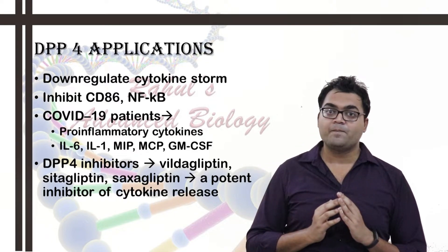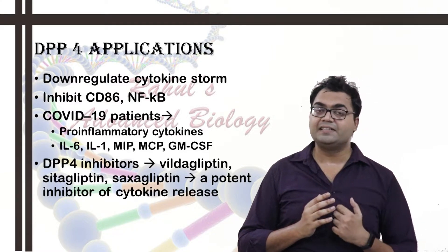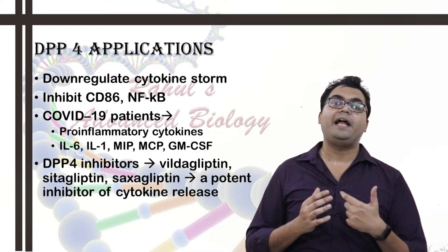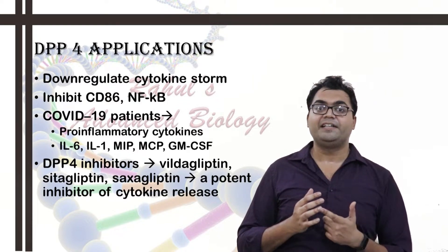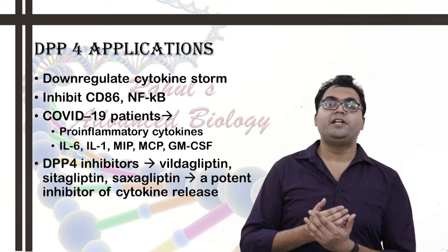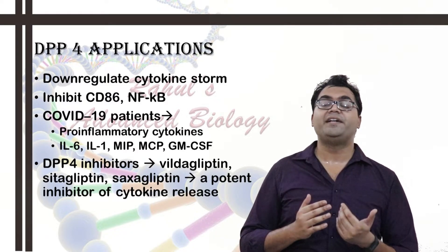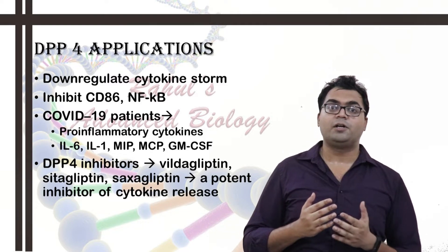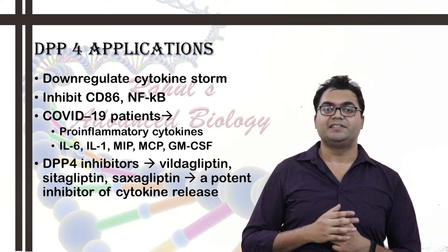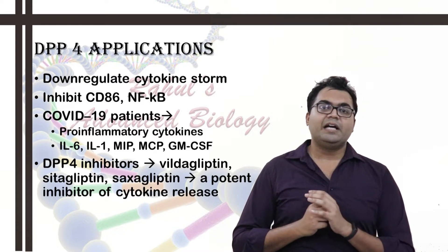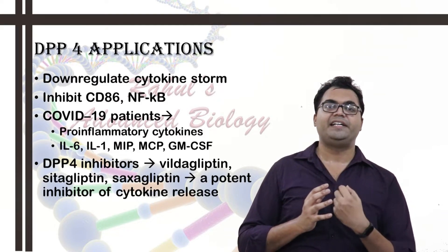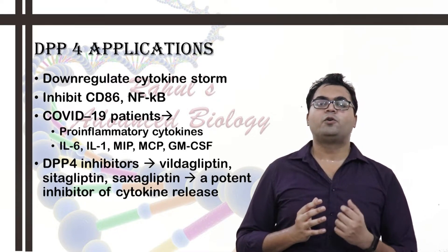In thymus T cells, DPP-4 is upregulated, causing activation of T cells. In case of DPP-4 engagement or activation, it can activate CD86. When the DPP-4 receptor is engaged, it can also activate the nuclear factor Kappa-B pathway — NF-κB — which is a pro-inflammatory pathway, and can cause cytokine storm and cytokine storm-induced damage, which has been observed in COVID-19 patients. Thereby, one could inhibit DPP-4 and try to mitigate the cytokine storm-mediated damage occurring in patients suffering from COVID-19.